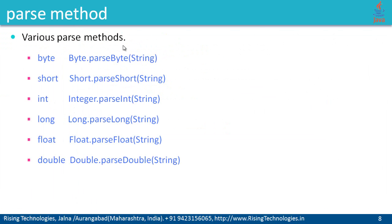There are various parse methods available within various wrapper classes. There are 8 primitive data types in Java and 8 wrapper classes — one class for each primitive data type. So int is the primitive type whereas Integer is the respective wrapper class. All these wrapper classes have a respective parse method. Within the Byte wrapper class there is parseByte, which takes a string and returns its equivalent byte value. Within Short class there is parseShort, which takes a string and returns its equivalent short value. Similarly, Integer.parseInt — which we just saw — takes a string and returns its equivalent integer. Also, Long.parseLong, Float.parseFloat, and Double.parseDouble. All these methods take a string as a parameter and return the respective primitive value.